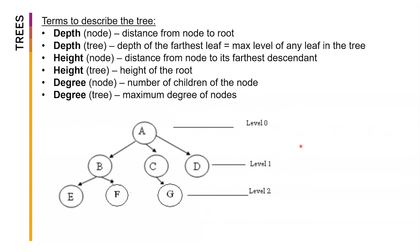There are more terms to describe a tree. The depth of a node is its distance from the node to the root. For example, the depth of node G is 2 — going one to C, then two to A. The depth of the tree is the depth of the farthest leaf — we look at all leaves and find the maximum. Here, the depth of the entire tree is 2.